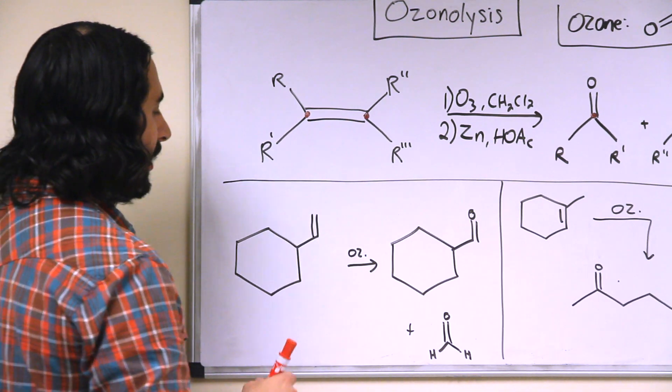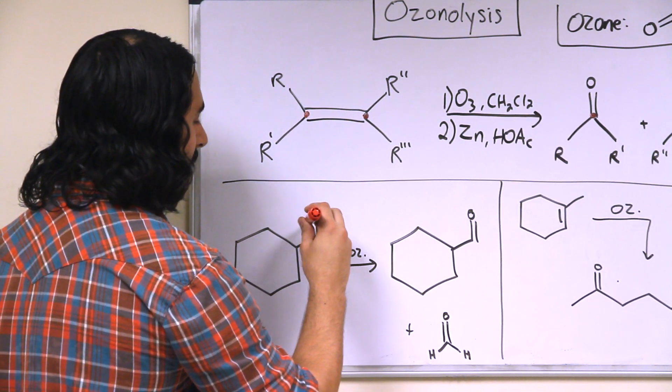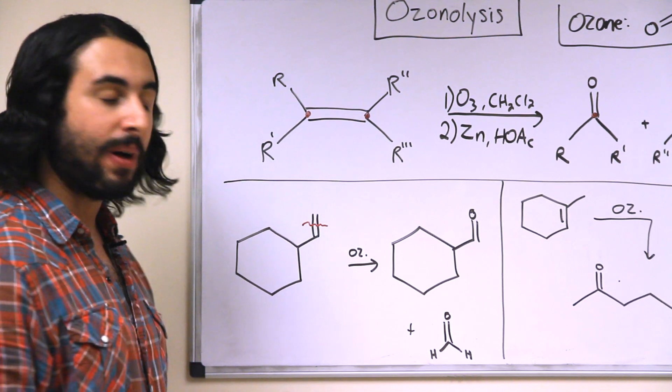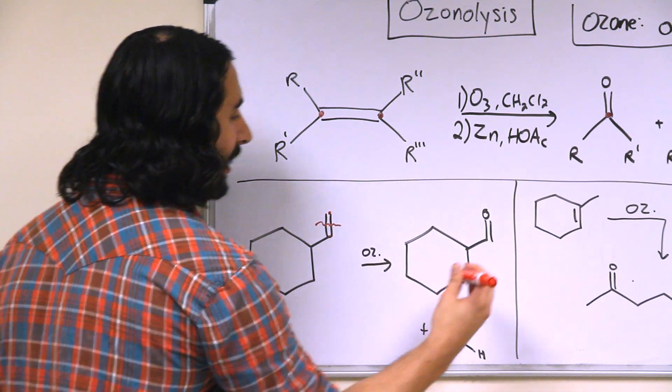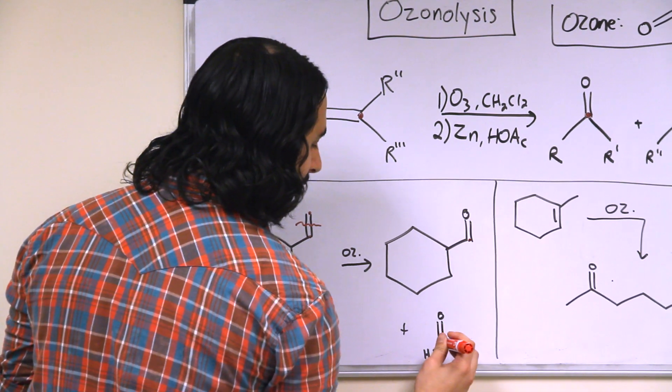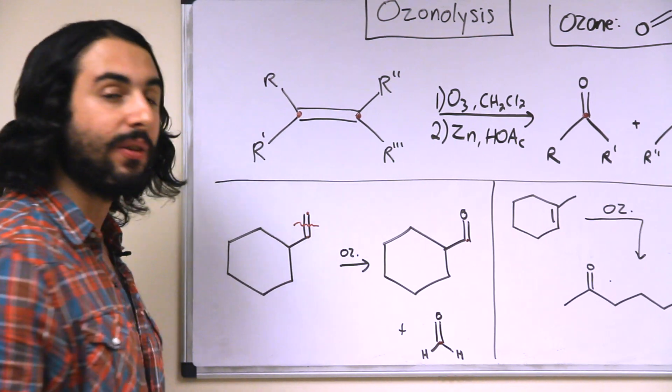Basically, any time you're looking at an ozonolysis reaction, remember that we are cleaving that double bond and pulling apart the fragments. On each of the carbons that was participating in the double bond, we will place an oxygen atom, and it will be in the form of a carbonyl.